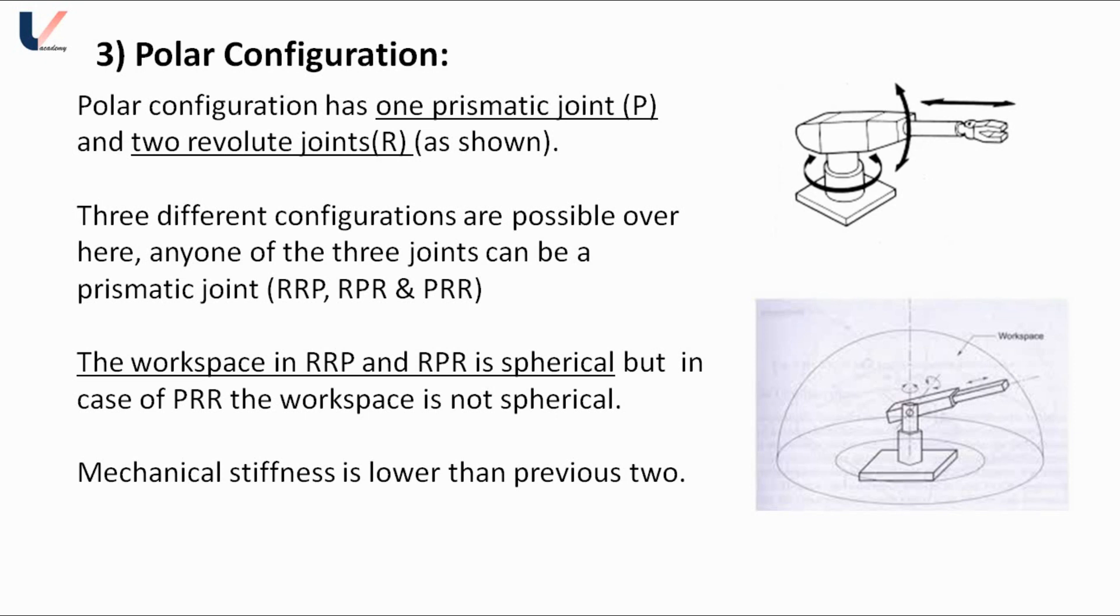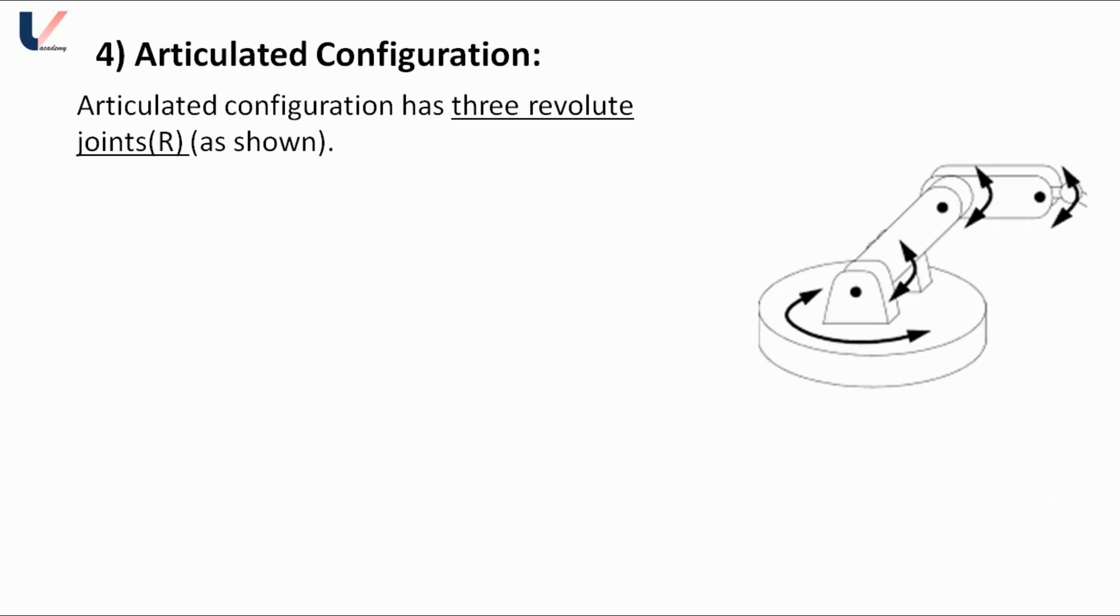This configuration is mainly used in machining processes, spray painting, etc. Now the last one, the fourth configuration, is articulated configuration. It has all three joints of revolute type, that is RRR configuration. The workspace in RRR configuration can be a full sphere.